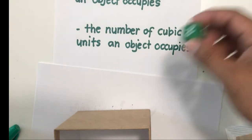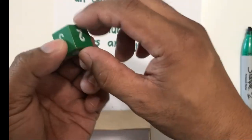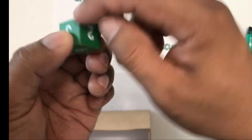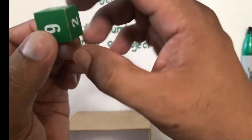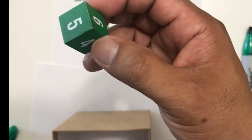What is a cubic unit? You can think of cubic unit as a cube like this. If the dimension is one centimeter by one centimeter, then we call this cube as cubic centimeter.